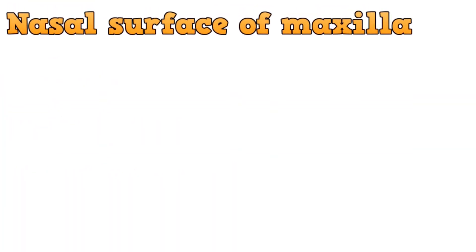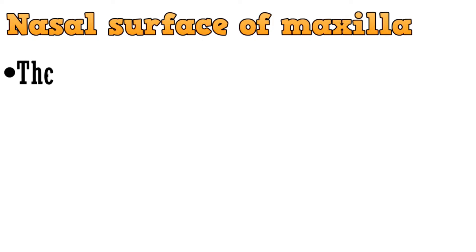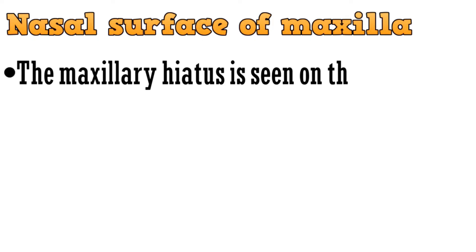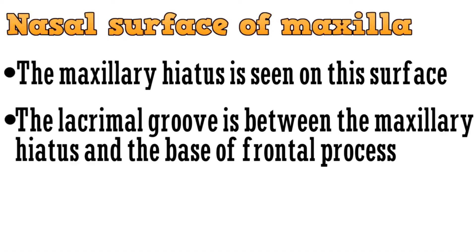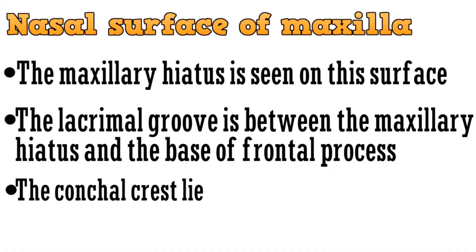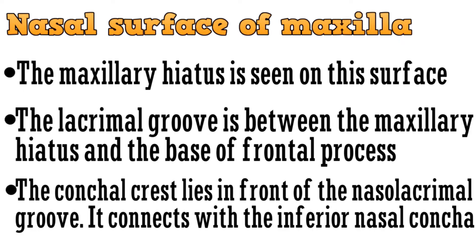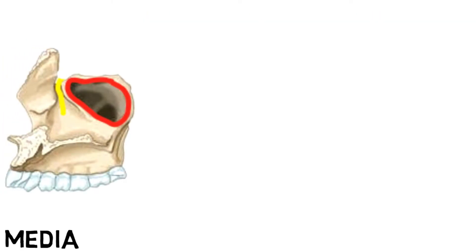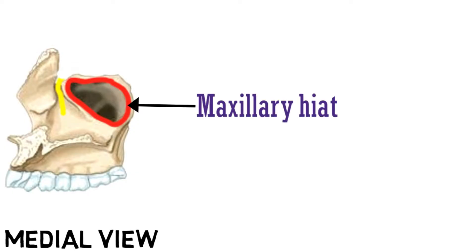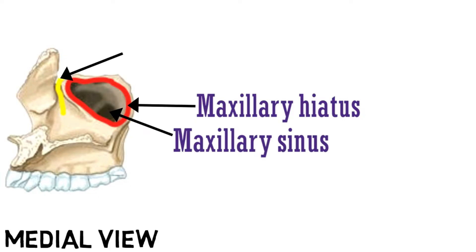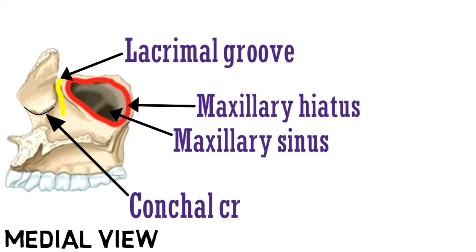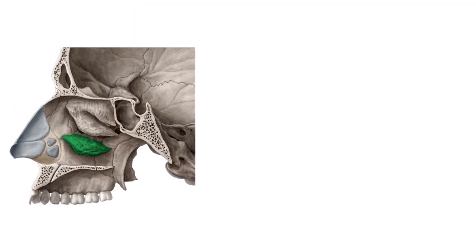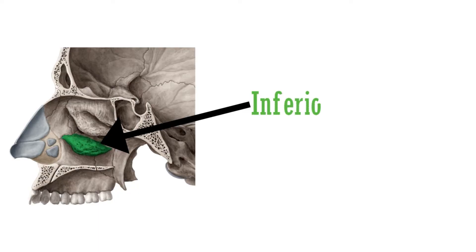The third surface of the body of maxilla is the nasal surface. The maxillary hiatus is seen on this surface. The lacrimal groove is between the maxillary hiatus and the base of the frontal process, and the conchal crest lies in front of the nasolacrimal groove — it connects with the inferior nasal concha. The boundary outlined in red is the maxillary hiatus, with the maxillary sinus inside. The yellow line depicts the nasolacrimal groove, and the curve is the conchal crest connecting to the inferior nasal concha.